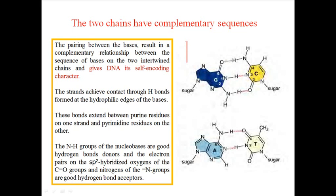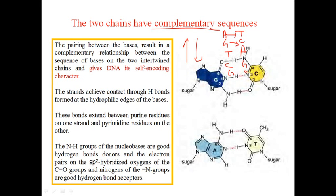Now we have talked about the antiparallel nature of DNA. Let's talk about another thing: why they are complementary sequences. What do you mean by complementary sequences? That means if we have a sequence G-T-C-G, its complementary sequence will be C-A-G-C. So complementary means A is complementary with T, G is complementary with C, and vice versa — T is complementary with A.